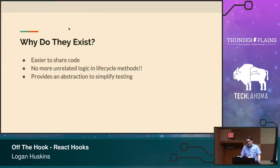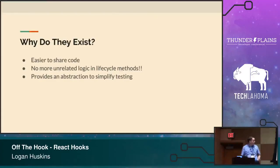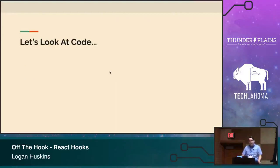So why do React hooks exist? React hooks exist because they make our code easier to share around our application and with others. We no longer have unrelated logic in lifecycle methods. If you've used React you've probably seen componentDidMount doing 15 different unrelated things, and componentWillUnmount doing a bunch of unrelated things — those things are related to each other but not near each other. React hooks helps us get out of that pattern. They also provide an abstraction that helps us simplify testing.